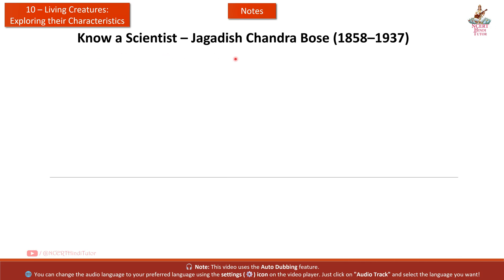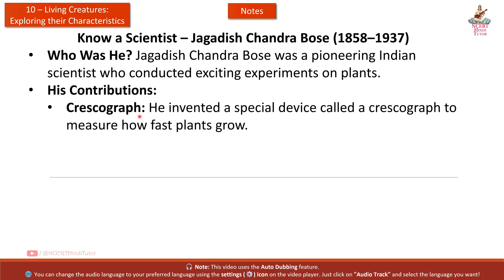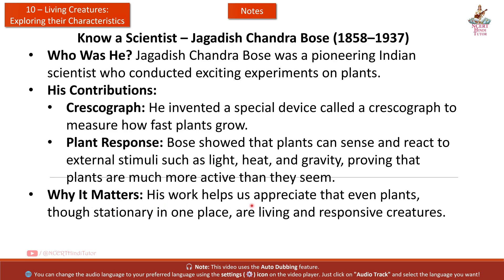Know a scientist: Jagdish Chandra Bose (1858–1937). He was a pioneering Indian scientist who conducted exciting experiments on plants. His contributions include the Crescograph, a special device he invented to measure how fast plants grow. Bose showed that plants can sense and react to external stimuli such as light, heat, and gravity, proving that plants are much more active than they seem.